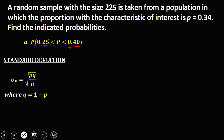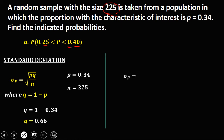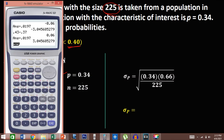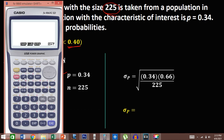Q equals 1 minus P. From the problem, P = 0.34 and N = 225. So Q = 1 minus 0.34 = 0.66. The standard deviation is the square root of (0.34 times 0.66 divided by 225). Using the calculator: square root of (0.34 × 0.66 ÷ 225) = 0.0316.